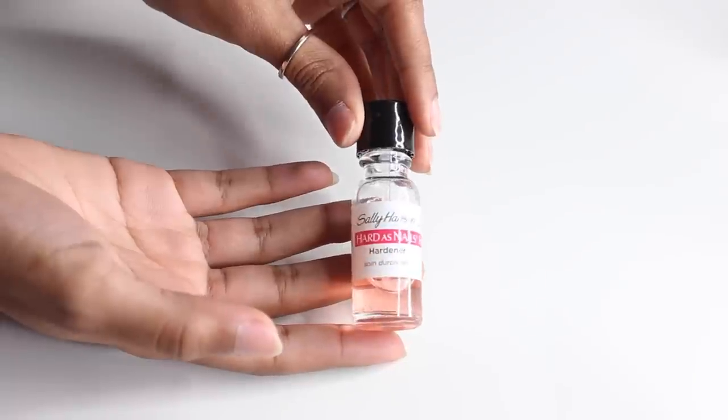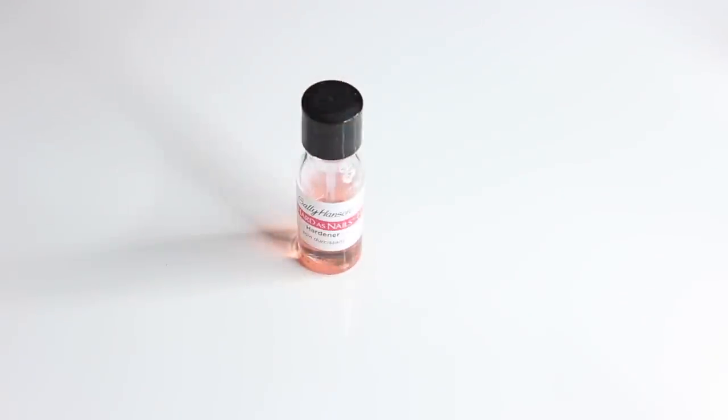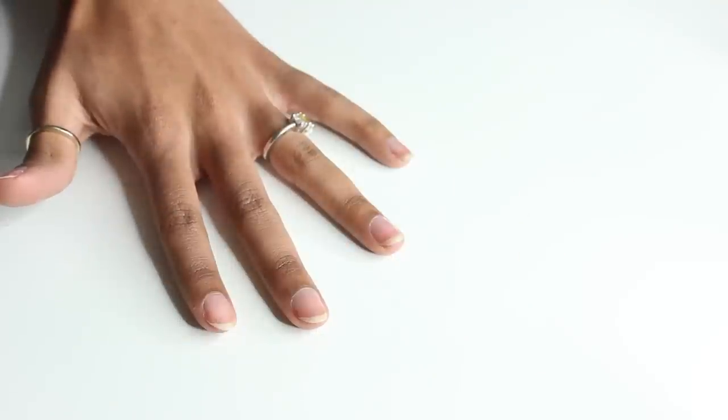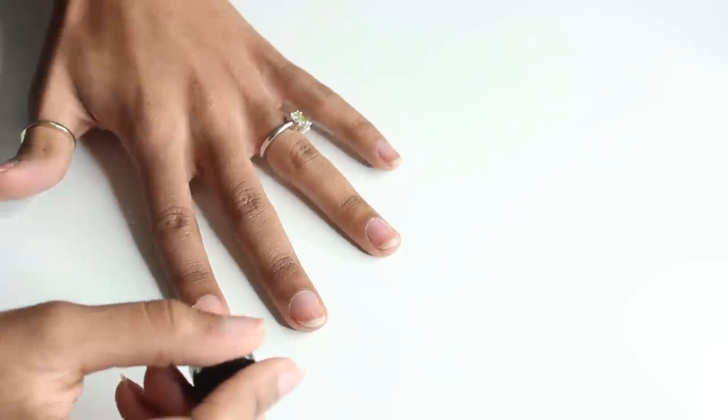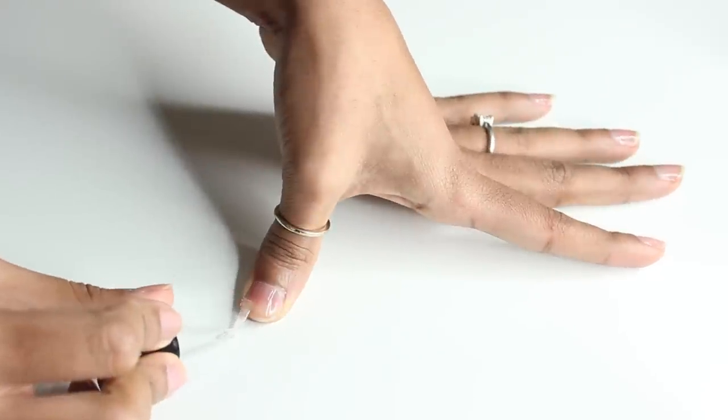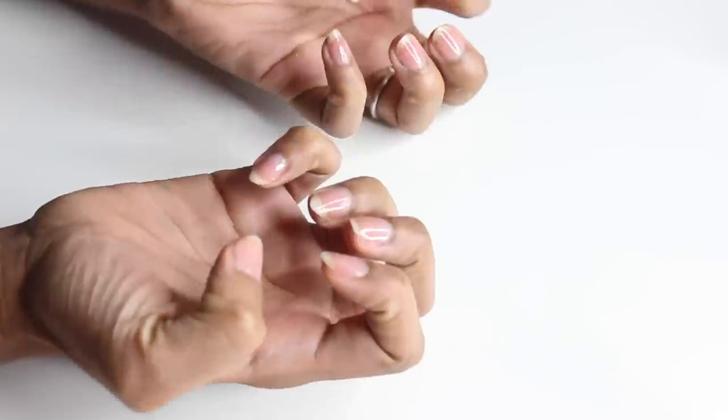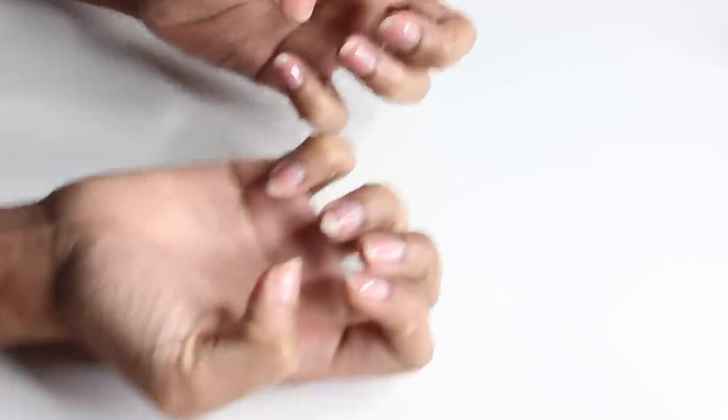This is the Sally Hansen Hardest Nails nail hardener. It's a top coat you can use—it's like a light pink color, but it doesn't really have much color, just makes your nails look shiny. It keeps them from being so brittle so they don't break, and it helps them grow out. After applying the Hardest Nails, it will look pretty and shiny and you can go on about your day without breaking your nails.